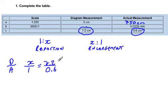And so we're going to cross-multiply. So x times 0.6 is 0.6x. So that's 0.6x equals 1 times 7.2, which is 7.2.